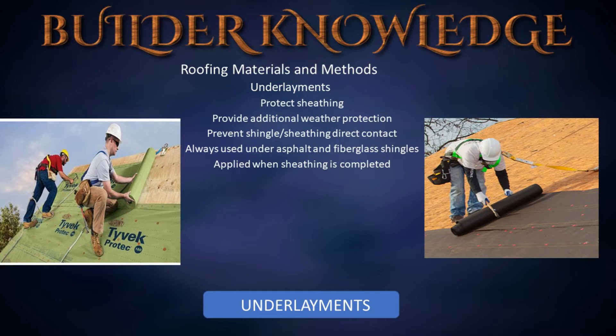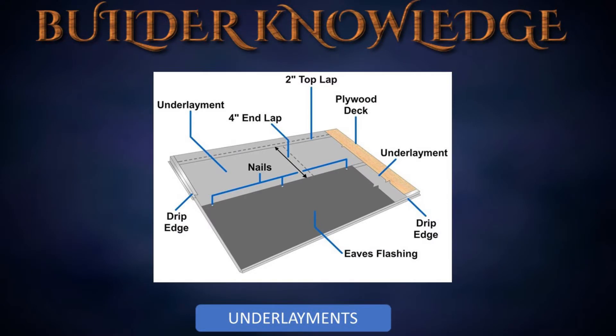Underlayment is applied over the entire roof surface as soon as the sheathing installation has been completed. It requires a two-inch top lap at horizontal joints and a four-inch side lap or end lap at end joints. Laps at the hips are six inches, ridges are six inches, and valleys are six inches as well. Most underlayment will have lap lines already printed on it.